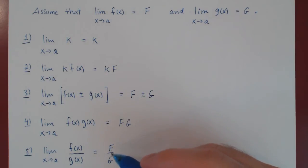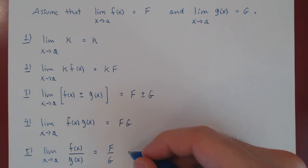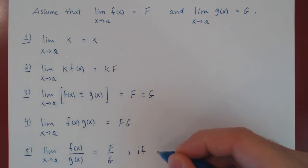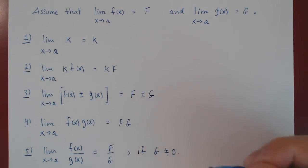Of course there could be a problem here. The quotient may not exist if g is actually zero. So we have to add here the condition if, as long as, the limit of g of x, uppercase G is not equal to zero.